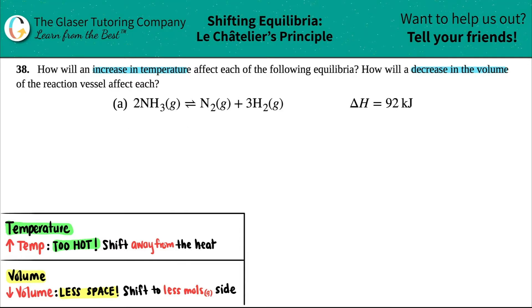First, I'm going to rewrite this equation so we can work with it better. We got 2NH3 gas which comes to equilibrium with N2 gas plus 3H2 gas.